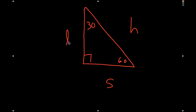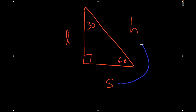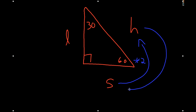If you go from the short leg to the hypotenuse, you take the length of the short leg and you multiply it times 2. If you go from the hypotenuse to the short leg, if you know the value of the hypotenuse, you take that value and you divide it by 2.